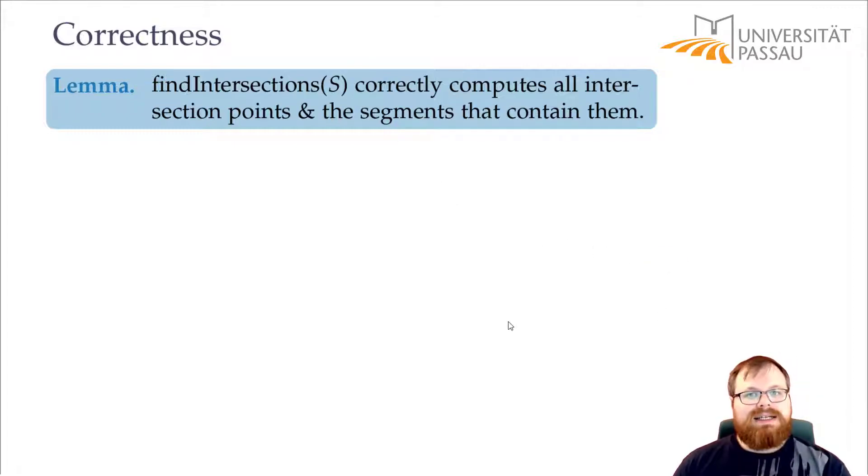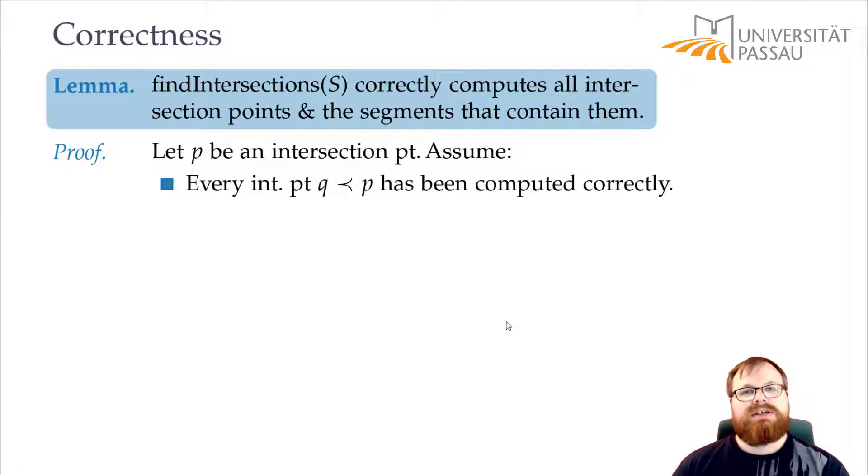How do we do this? Let p be some intersection point. We want to make two assumptions. First, every interior point that lies before p has been computed correctly.